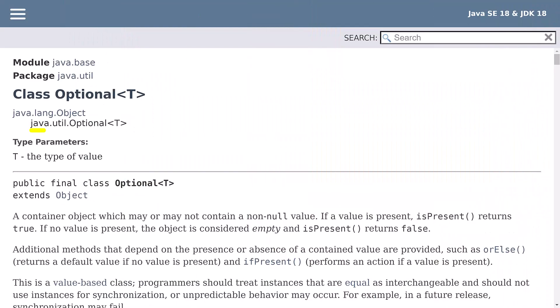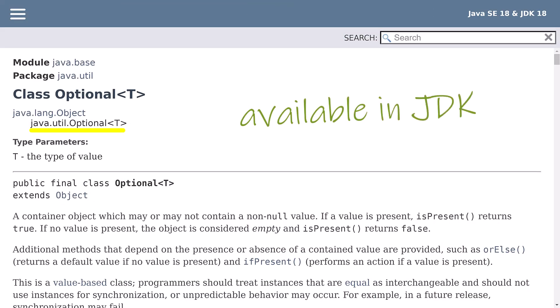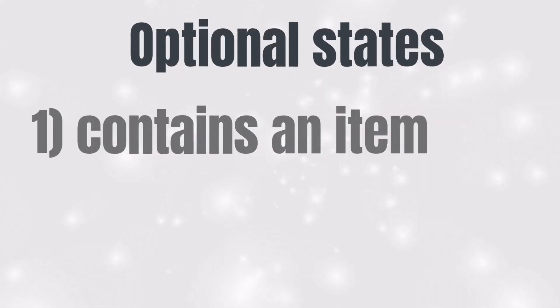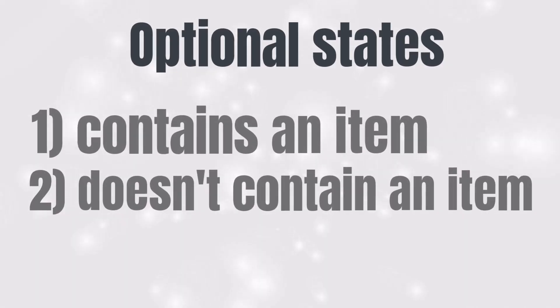Optional is simply a Java class located in the java.util package and available within the Java Development Kit, the JDK. That means we can use it anywhere in our Java code simply by creating an instance of that class. It's helpful to understand that Optional is simply a container for an object. Just like real-life containers, it can have one of two states: it contains an item, also known as present, or it doesn't contain an item, also known as empty.